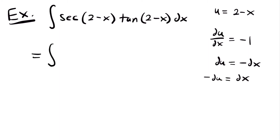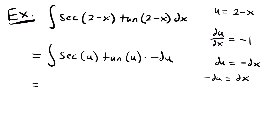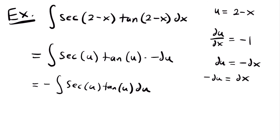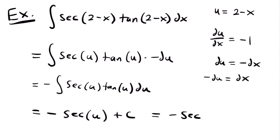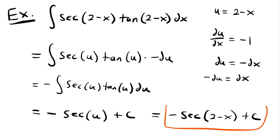We rewrite the integral as the integral of secant of u times tangent of u times negative du. Taking the negative to the outside: negative times the integral of secant u times tangent u du. The integral of secant times tangent is secant — since the derivative of secant is secant tangent, the integral of secant tangent is secant. So this equals negative secant u plus c. Replacing u with 2 minus x, our final answer is negative secant of 2 minus x plus c.